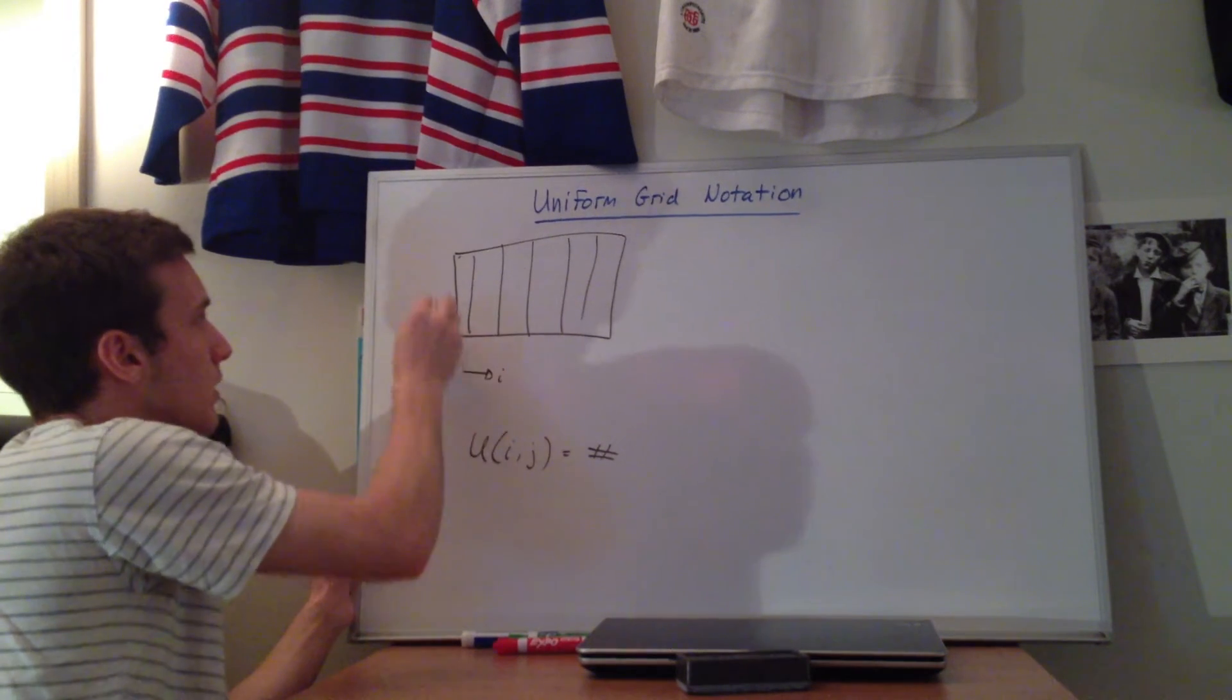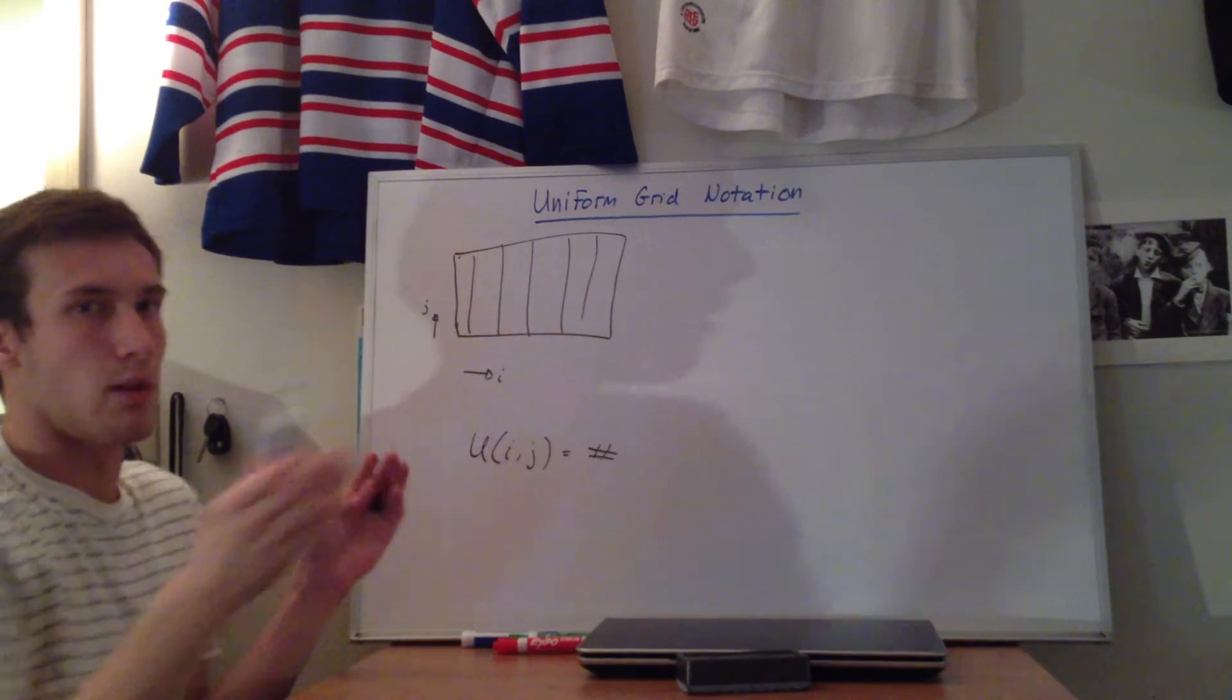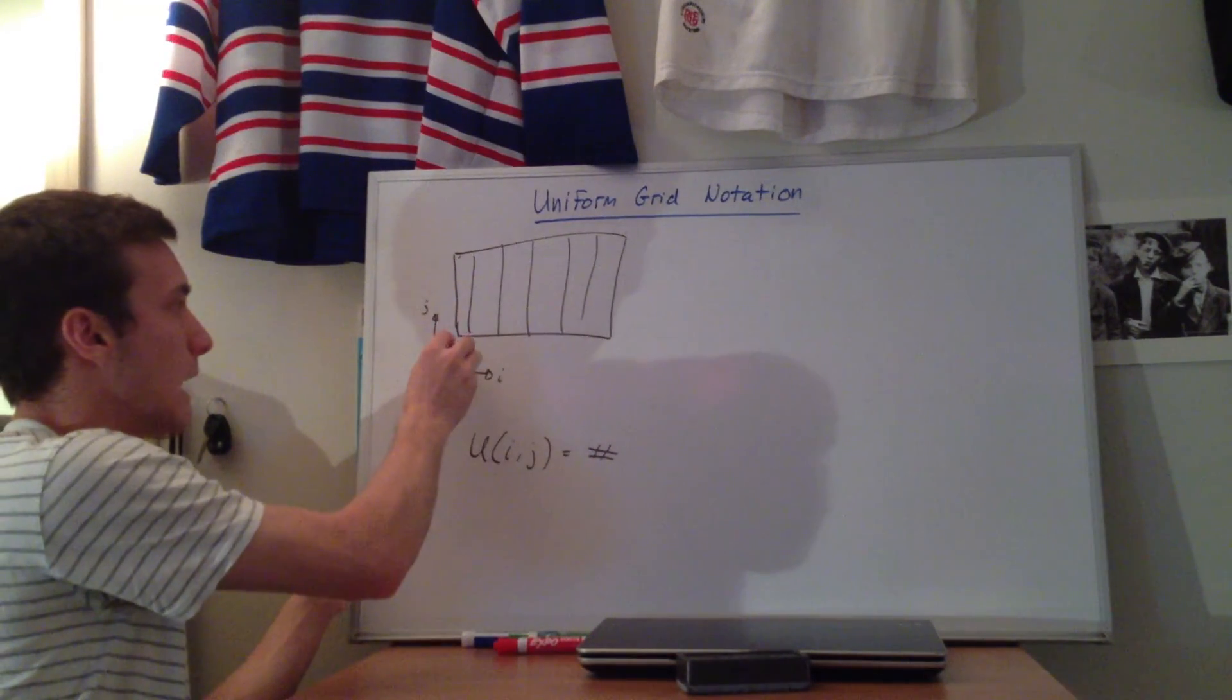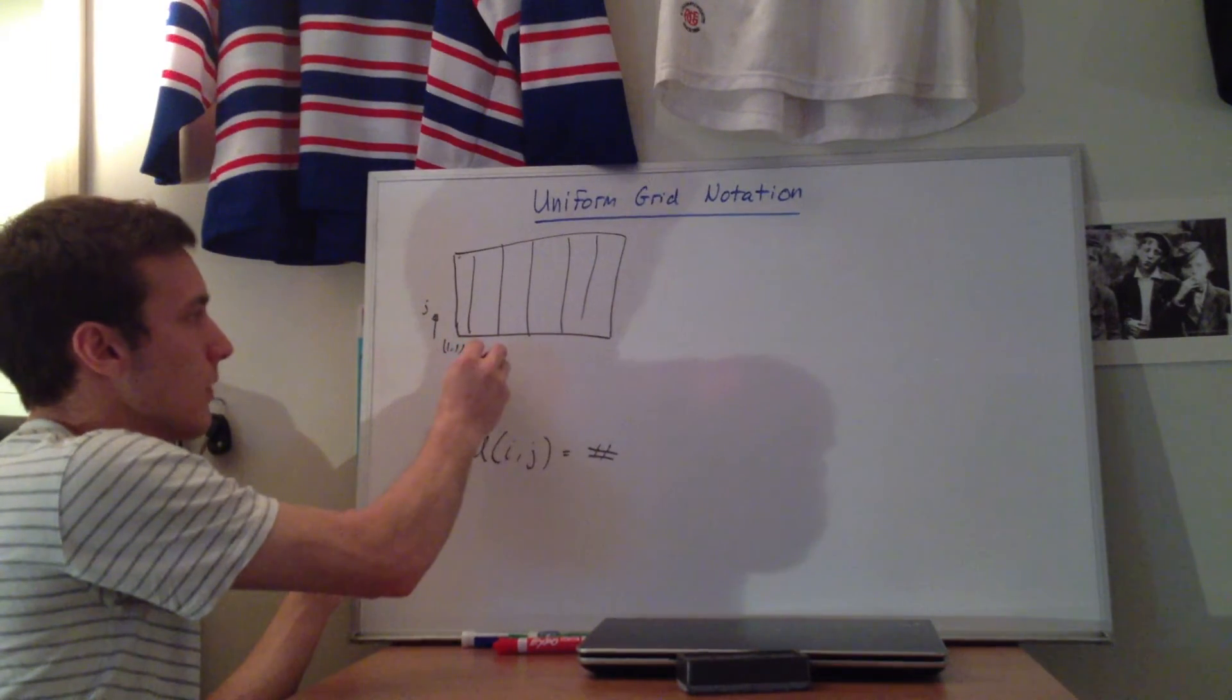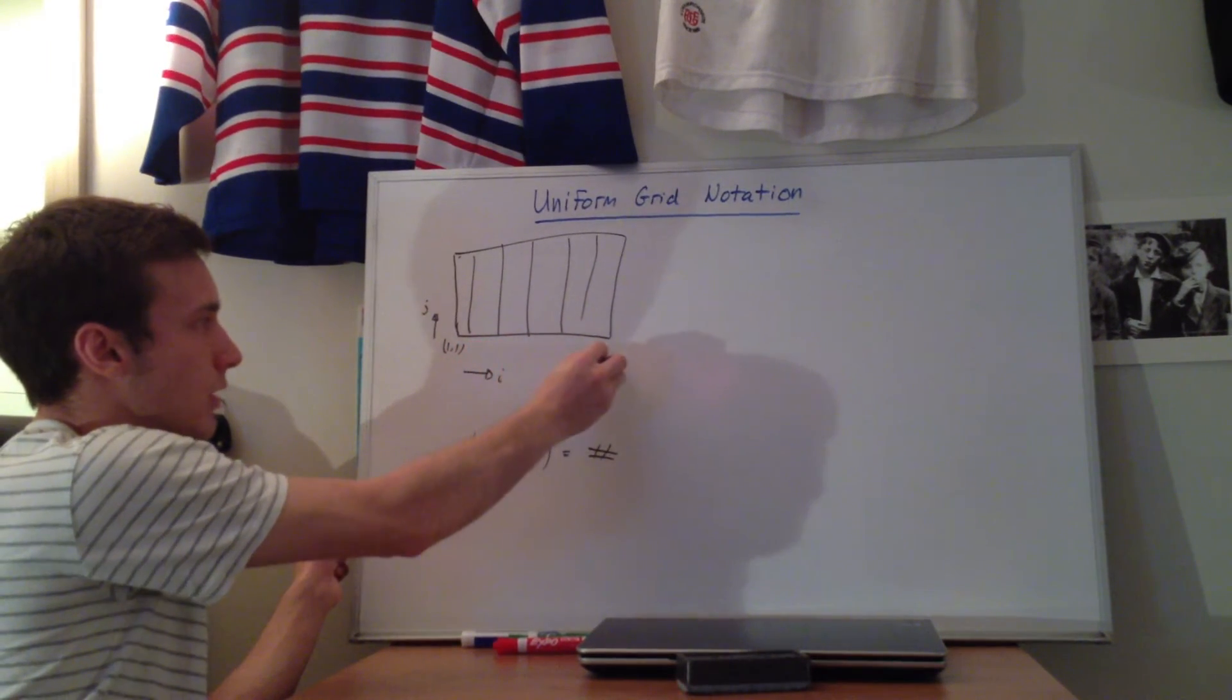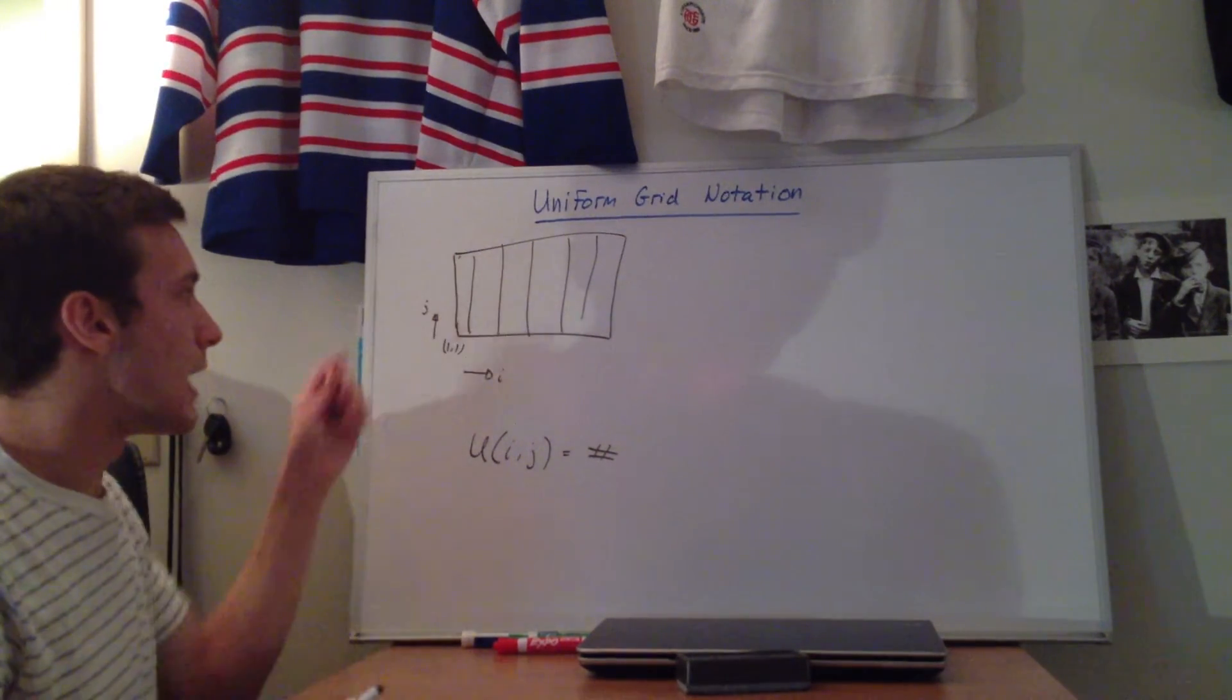We're saying that this is the i direction, and then this is the j direction. So here I'm going from the bottom left-hand corner, just because it kind of makes sense to go from the bottom left-hand corner, calling this 1, 1, and then going out to, you know, 2, 1, 3, 1, 4, 1, 5, 1, all the way out to here, and then up here would be 1, 2, 1, 3, 1, 4, 1, 5, all the way up to j max.